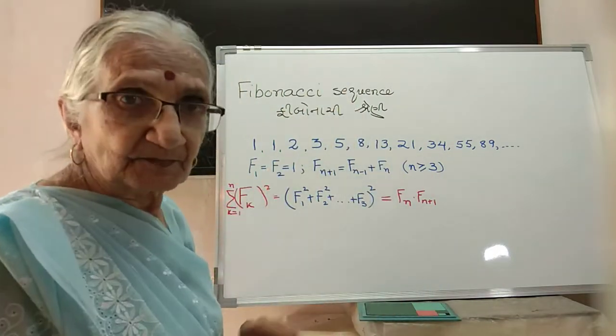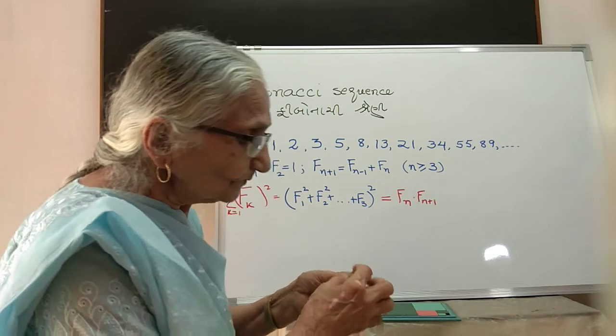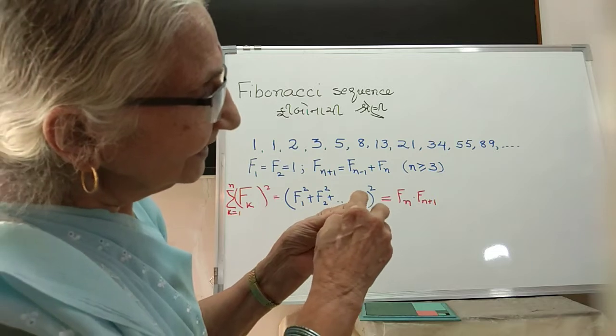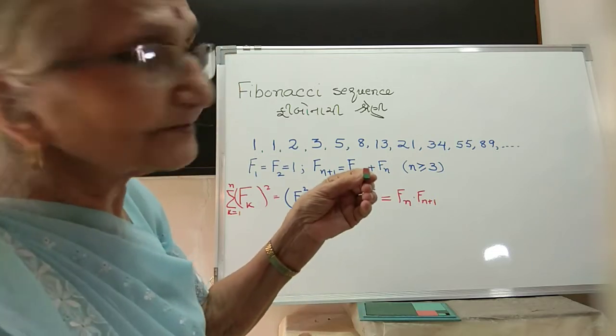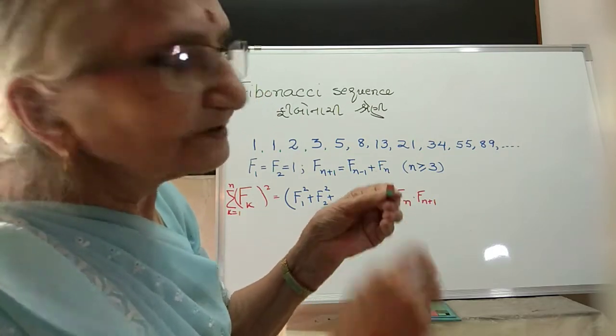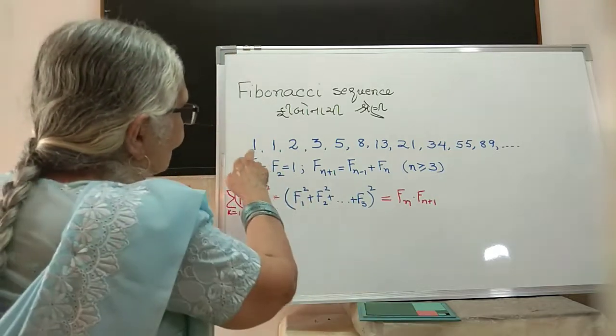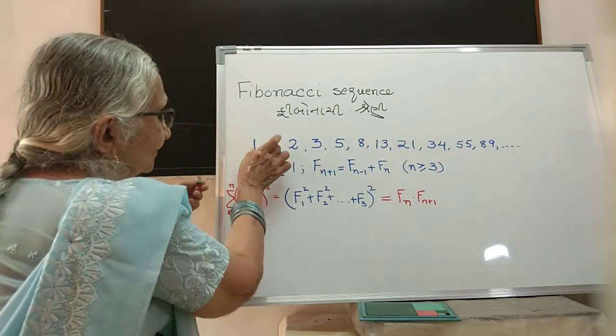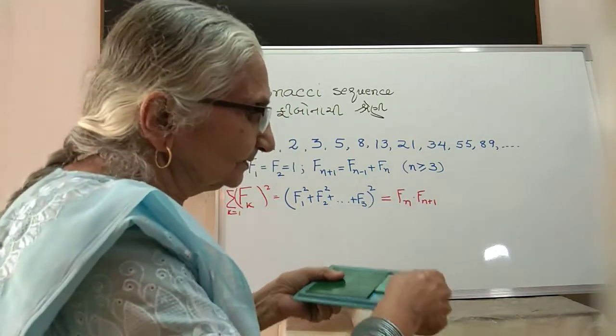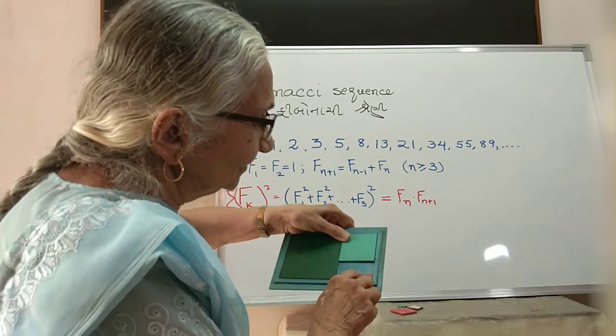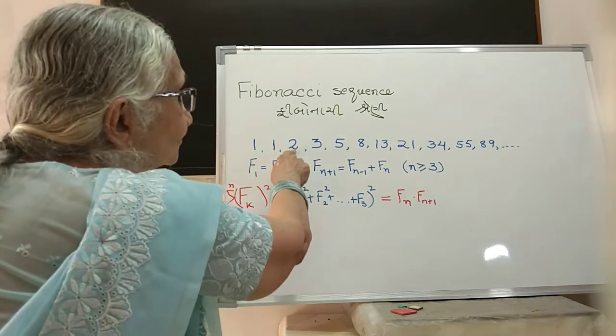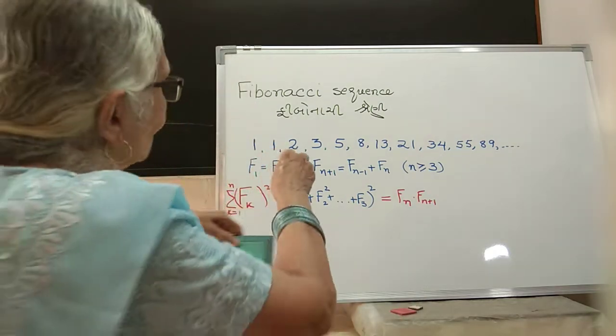What we have done here is this: this length we are taking as a unit length, and you can see there are two squares with unit length sides. So the area of the lower one is 1², the area of the upper one is also 1², and that gives us 1² + 1². So here we have 1² + 1².